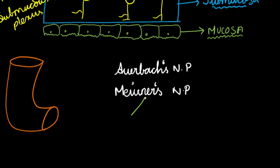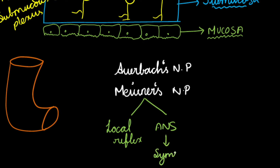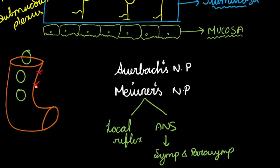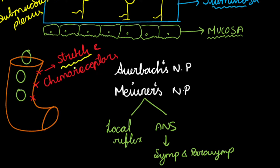Auerbach's plexus and Meissner's plexus get activated through local reflex, and they are also stimulated by the autonomic nervous system — sympathetic and parasympathetic activity. Whenever food enters the GIT, there are receptors present in the walls of the intestine — stretch receptors and chemoreceptors. When the wall gets stretched due to the food bolus, or when the food bolus enters the GIT causing a chemical reaction, the chemoreceptors get activated and stimulate Auerbach's and Meissner's nerve plexuses. This is how local stimulation occurs.